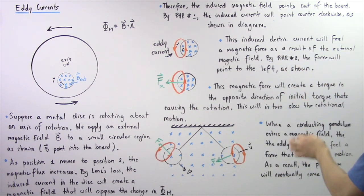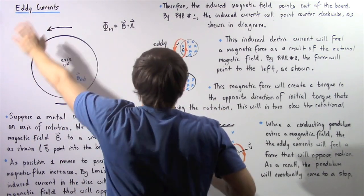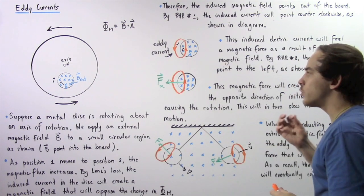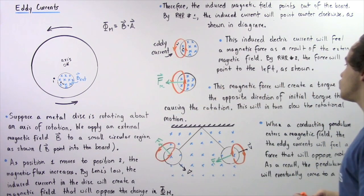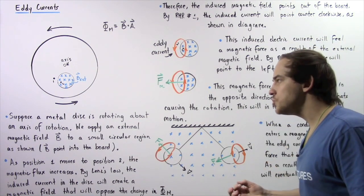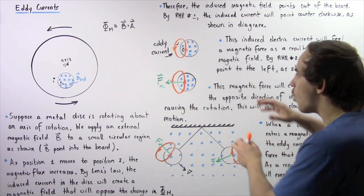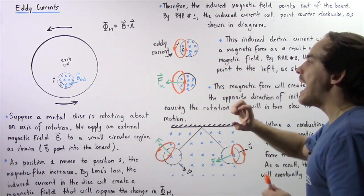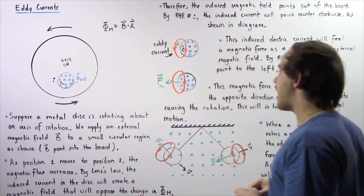This magnetic force will create a torque that points in the opposite direction of the initial torque that creates the rotation. Our initial torque points in the counter-clockwise direction, but this force will create a torque that points in the clockwise direction, opposing the initial torque. This will in turn slow the rotation of our disc. These eddy currents are induced electric currents that feel a force as a result of the magnetic field, and that force creates a torque that impedes the rotational motion of our object.